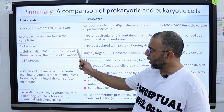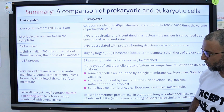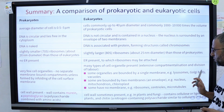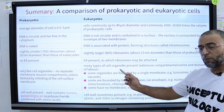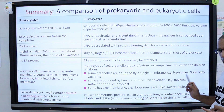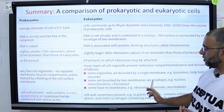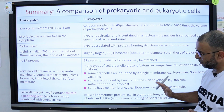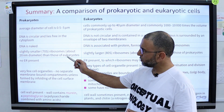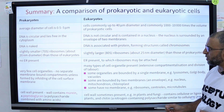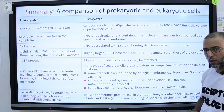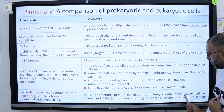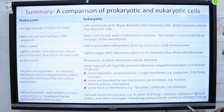Endoplasmic reticulum is absent in prokaryotic cells but present in eukaryotic cells. Some organelles are bounded by a single membrane, such as lysosomes, Golgi body, and vacuoles. Some are bounded by two membranes, like mitochondria, chloroplast, and nucleus. Some organelles are not bounded by a membrane, like ribosomes, centrioles, and microtubules — these are all present in eukaryotic cells. In prokaryotic cells, ribosomes are present but membrane-bounded organelles are absent, and the cell wall is composed of peptidoglycan and murine, whereas in eukaryotic cells the cell wall is composed of cellulose, lignin, and chitin.